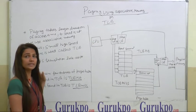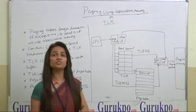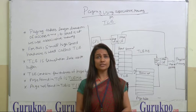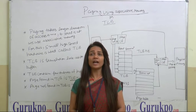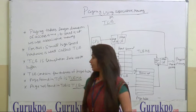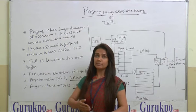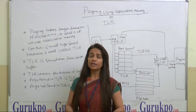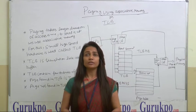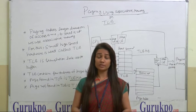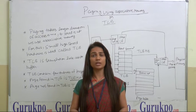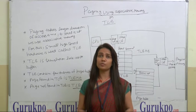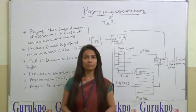TLB contains those entries which are also in our page table, in a pair — that is frame number and page number. The page number given by logical memory is stored in TLB and its corresponding frame number also.